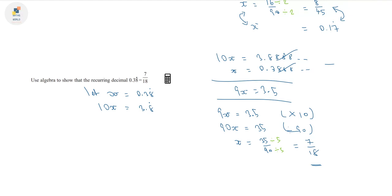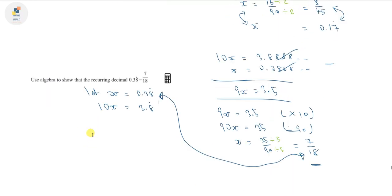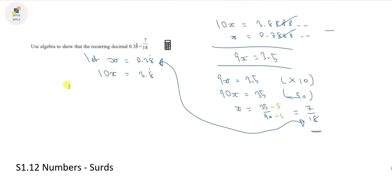Since x was equal to 0.38 recurring, we've actually proven that both of these things, where I've put the arrows, are actually equal to each other. So I hope this video has helped you out. Next video, I'll be talking about thirds.